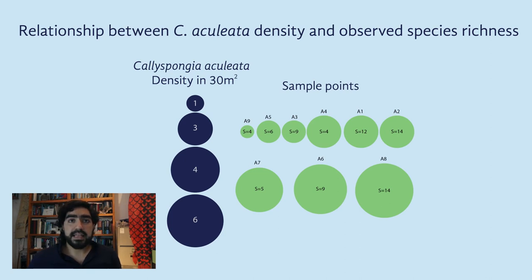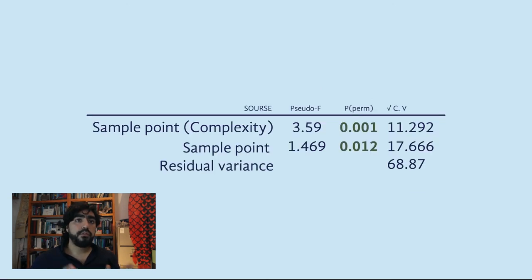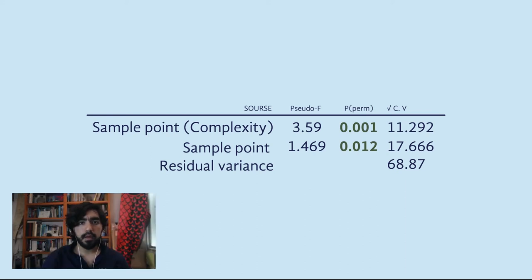But then, what scale explains the observed change — sponge distance or sponge heterogeneity? To answer this, we carried out a PERMANOVA test with a nested model between sponge density and sponge complexity. We found that both scales are significant and explain part of the variation in the model: at one scale, sponge complexity, and at the other, sponge density. Therefore, the observed species richness is regulated on one hand by the heterogeneity of each sponge, and on the other by the distance between sponges at each sample point.